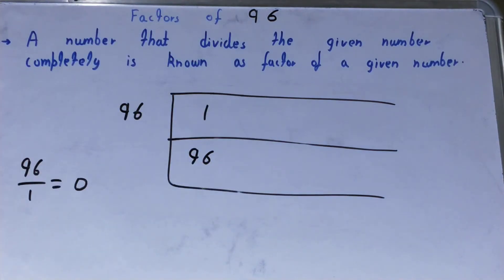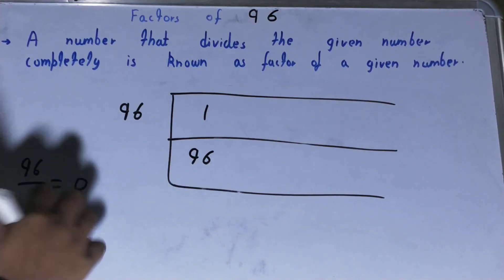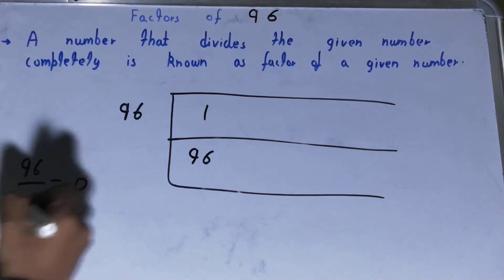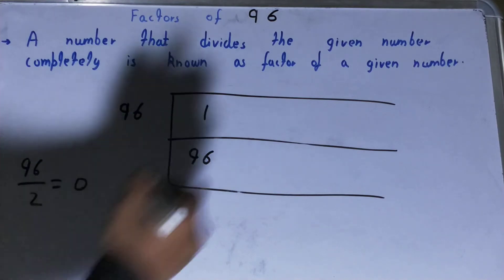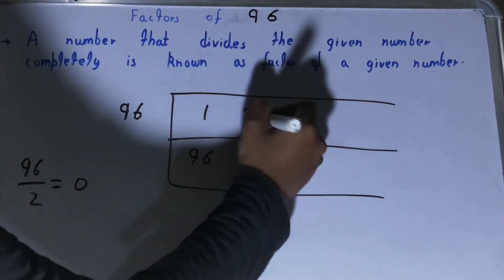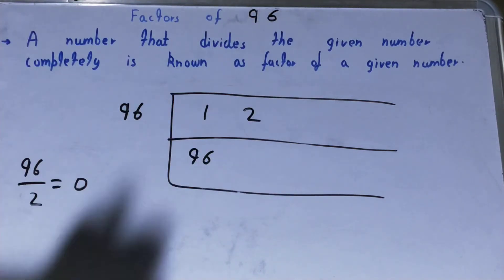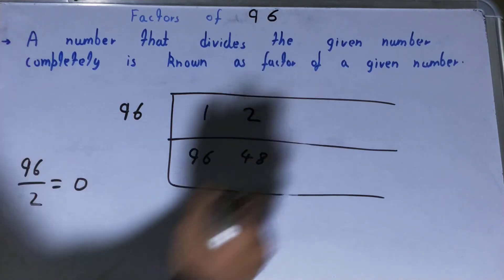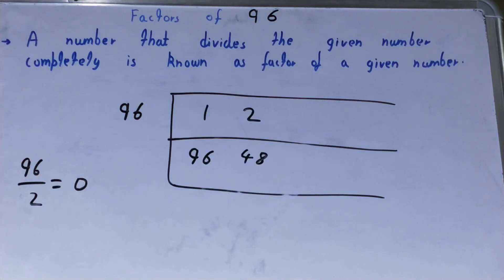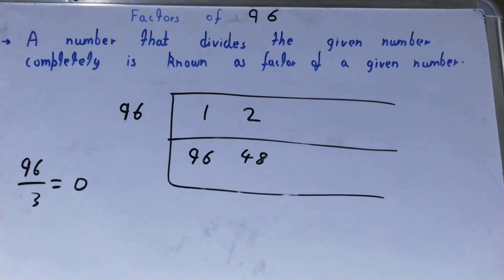After 1 comes 2. If we divide 96 by 2, we get the remainder as zero, so 2 is a factor. And since 2 times 48 equals 96, 48 is also a factor. After 2 comes 3. If you divide 96 by 3, you get the remainder as zero.